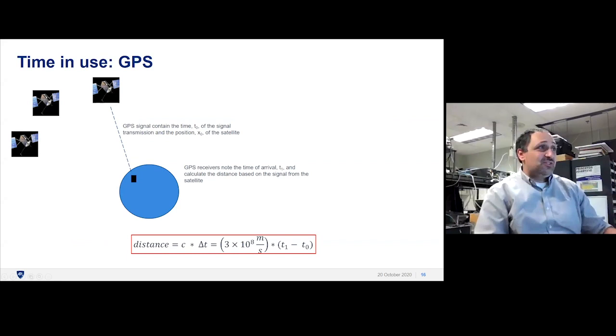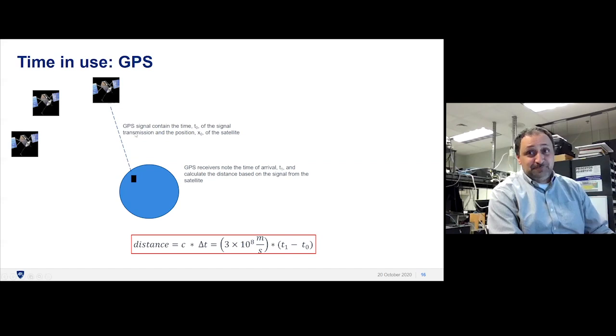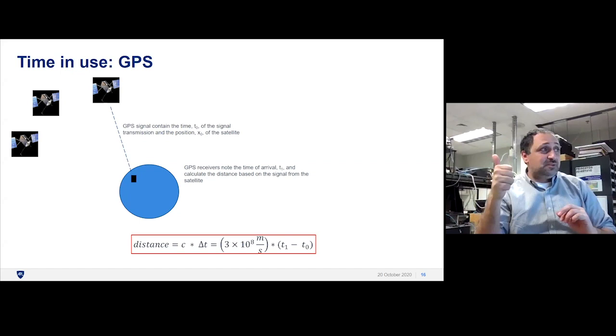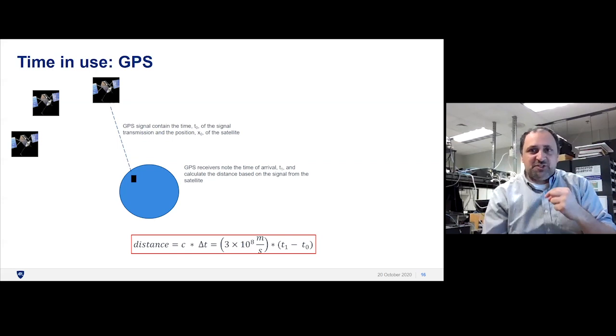Time in use: GPS. GPS is a constellation of satellites about 20,000 kilometers above the Earth. Pretty high up there—the radius of the Earth is 6,000 kilometers. So about four radii out. The GPS signal contains the time of transmission and the position of the satellite. A GPS receiver gets that message and notes the time it arrives. Using that, they can calculate the distance.